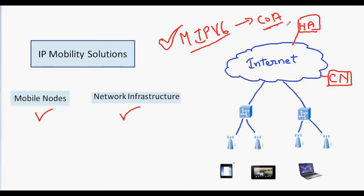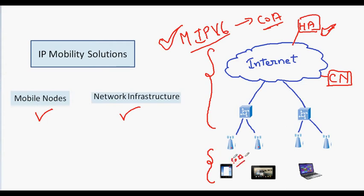The mobile node informs the care-of address to the correspondent node. Basically, the network infrastructure and the mobile node are both involved in maintaining the connection. The network infrastructure is involved because the home agent keeps the details of the new care-of address of the mobile node, and the mobile node obtains the new care-of address. So both the mobile node and the network infrastructure are involved when the mobile node moves from one access router to the other.